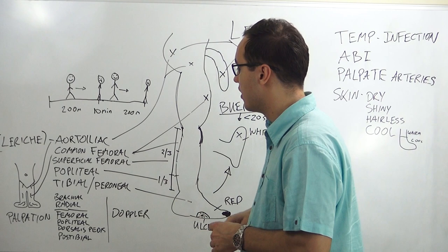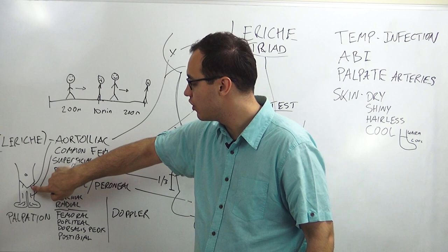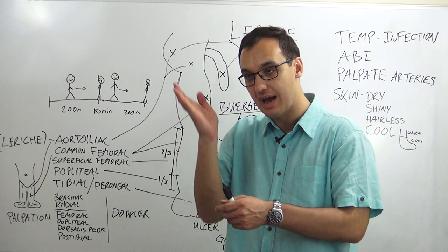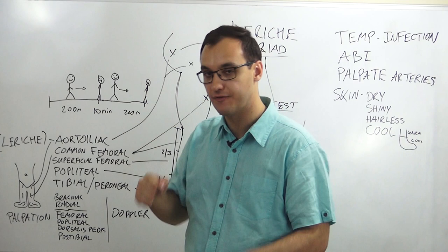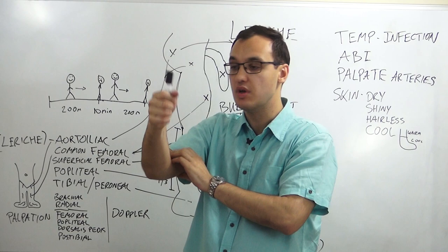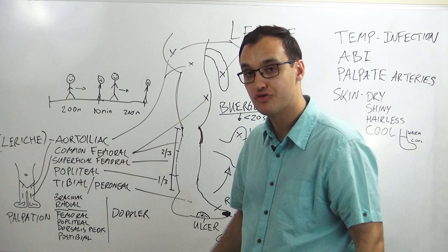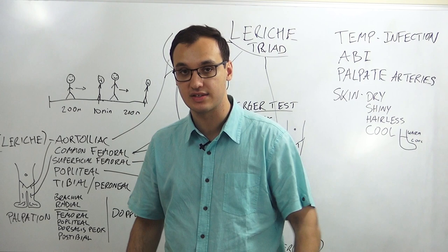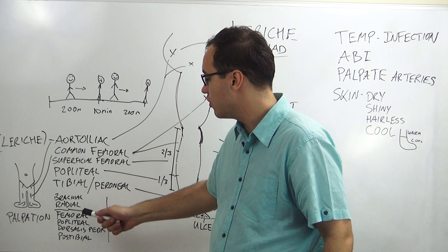We also palpate the arteries. I have drawn the femoral artery, popliteal artery, posterior tibial artery behind the ankle, and the dorsalis pedis on the forefoot. Peripheral artery disease usually affects the lower legs. The femoral artery is in the groin region — you place your hand there and try to feel the pulse.